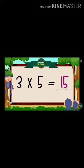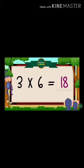Three fives are fifteen. Three fives are fifteen. Three sixes are eighteen. Three sixes are eighteen.